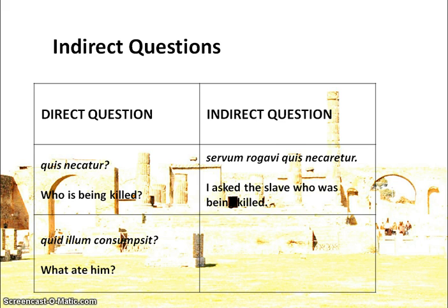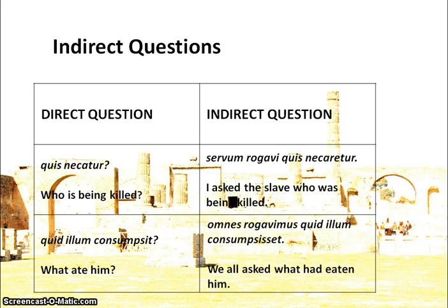Direct question quid illum consumpsit — 'what ate him?' — consumpsit is perfect, past tense. So in our indirect question we use the pluperfect subjunctive: omnes rogavimus is our above-the-neck verb, quid is interrogative vocab, illum consumpsset. 'We all asked what had eaten him.' Because consumpsset is pluperfect, we must have 'had' in our English translation.